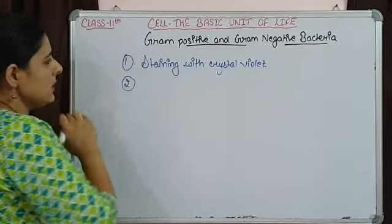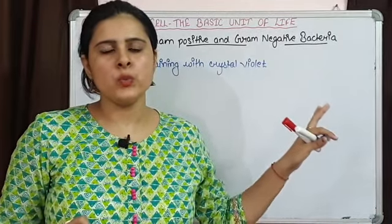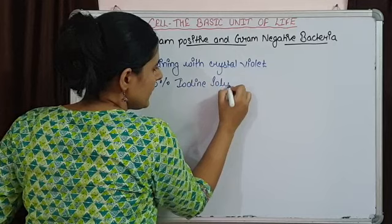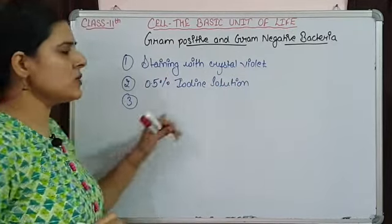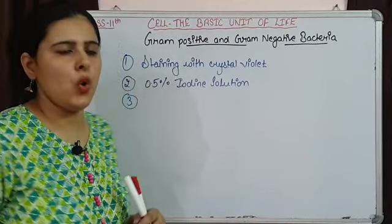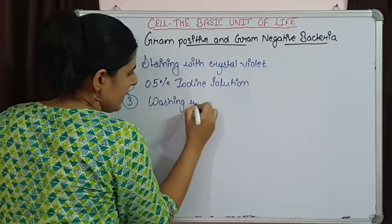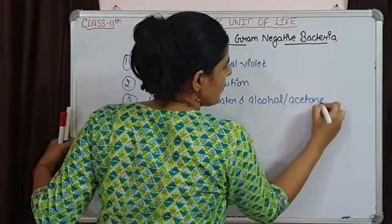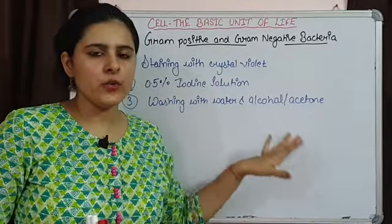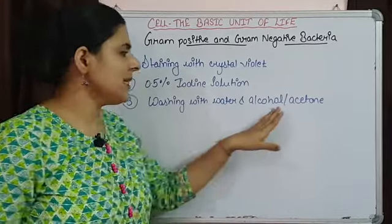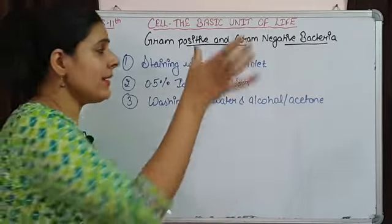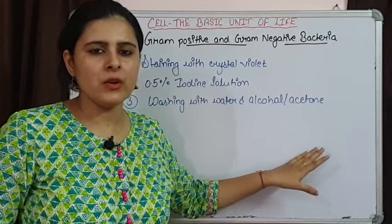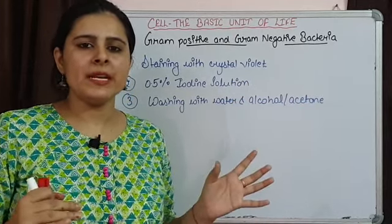The second step he did was to treat these stained bacterial cells with 0.5% iodine solution. After treating with iodine solution, he washed the bacterial cells with water and alcohol — you can also use acetone for washing. After washing with water and alcohol, some of the bacteria retained the color of crystal violet.